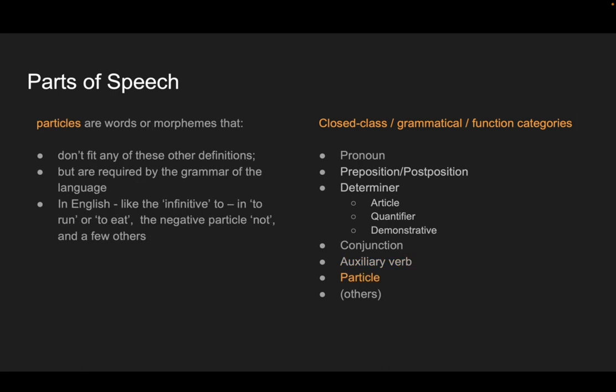Just like interjections are content words that don't fit anywhere else, in closed class categories we have particles — just little things you've got to have in your sentence, but they don't fit any of the other definitions. Like the 'to' we use in English to combine with a verb to create the infinitive — 'to run' — that 'to' doesn't mean anything, it just has to be there. When it's a preposition like 'to the store,' that has a different meaning. The negative word 'not' is another particle — important, but hard to categorize. And there will be others as well.